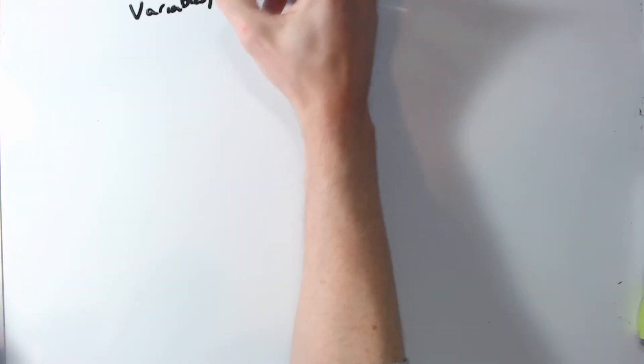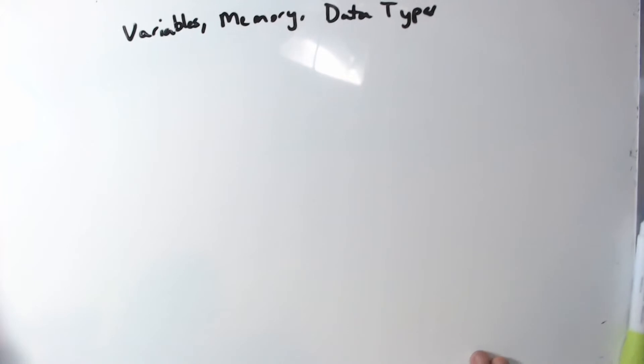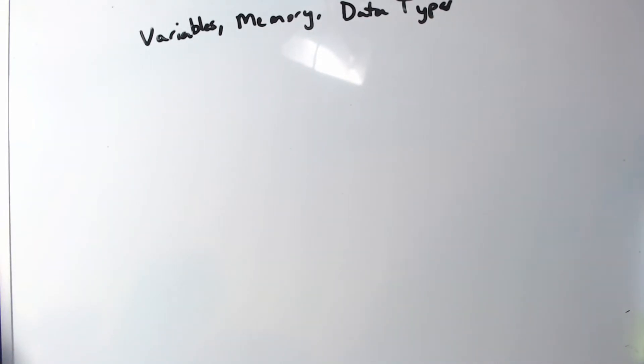Hey guys, it's Logan. Welcome to another video. This video is going to mark the start of a series of computer science videos for Game Maker that I will be releasing. In this video we're going to be talking about variables, memory, and data types. I'm going to get my pencil here. My art skills are not on point — I just feel like I'll be able to explain better with drawings than with a PowerPoint, so I'm going to try to keep it quick.